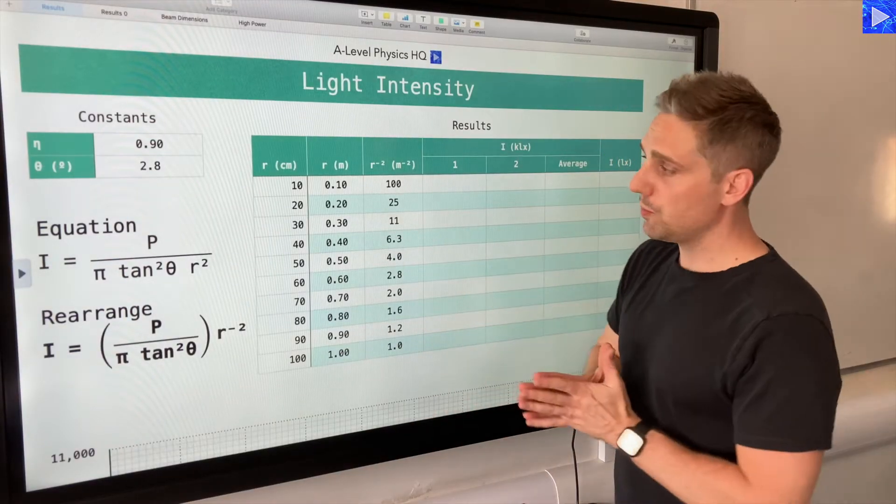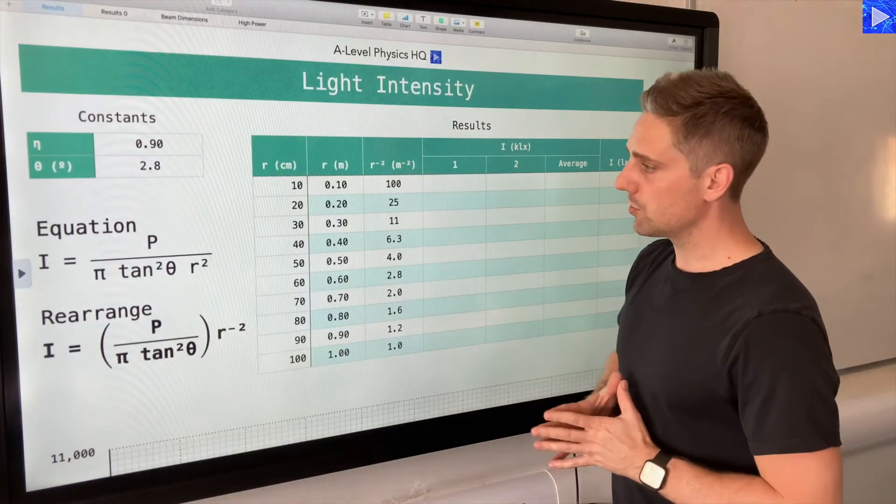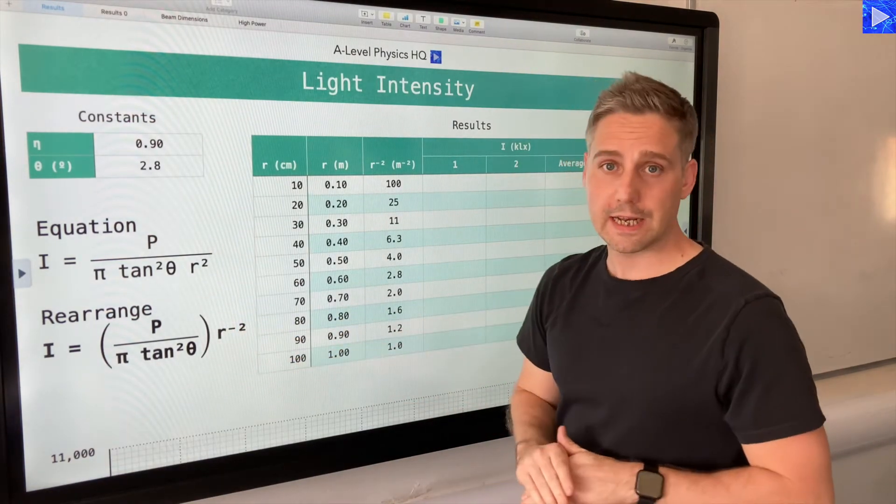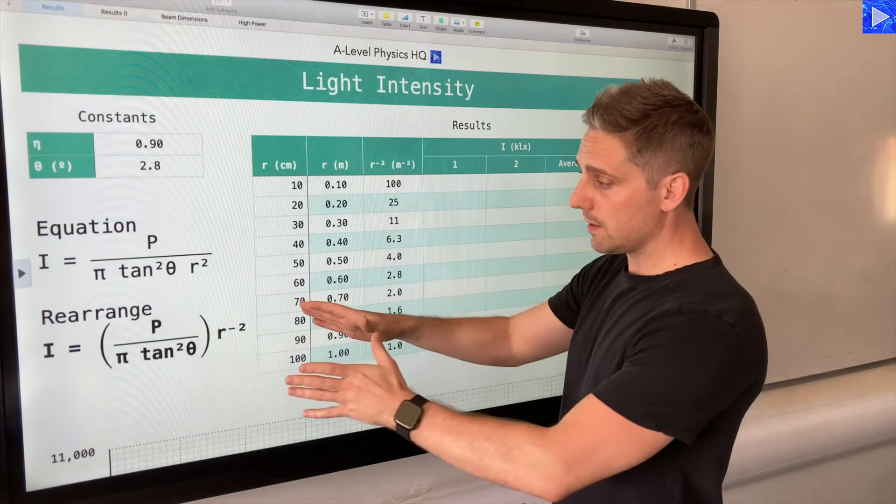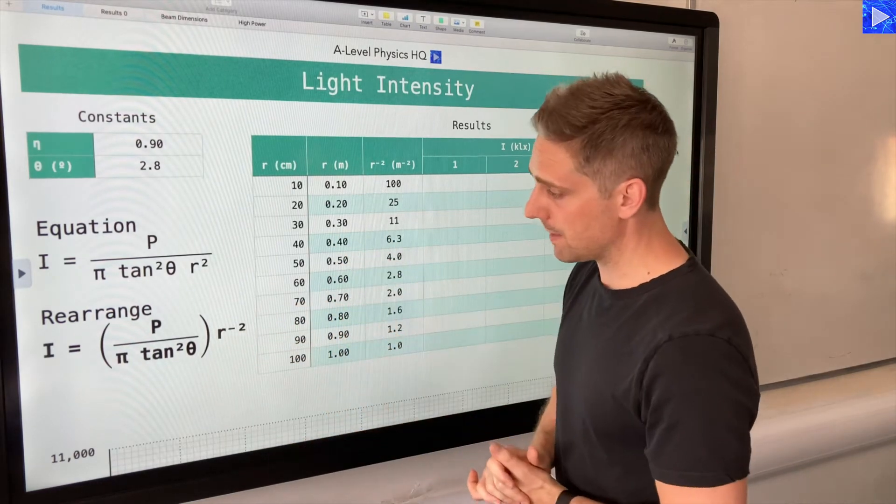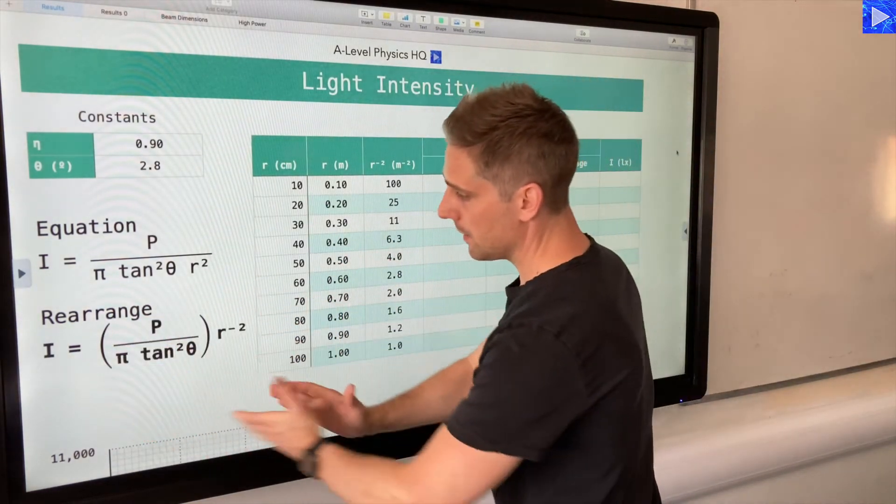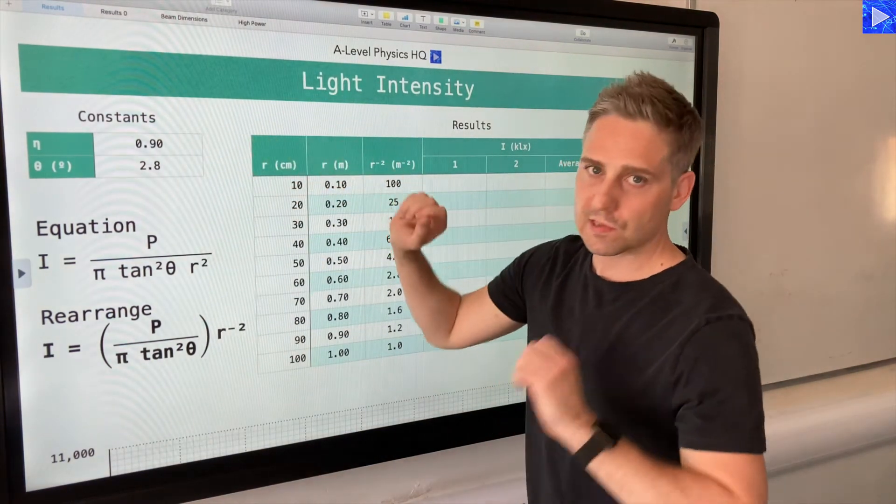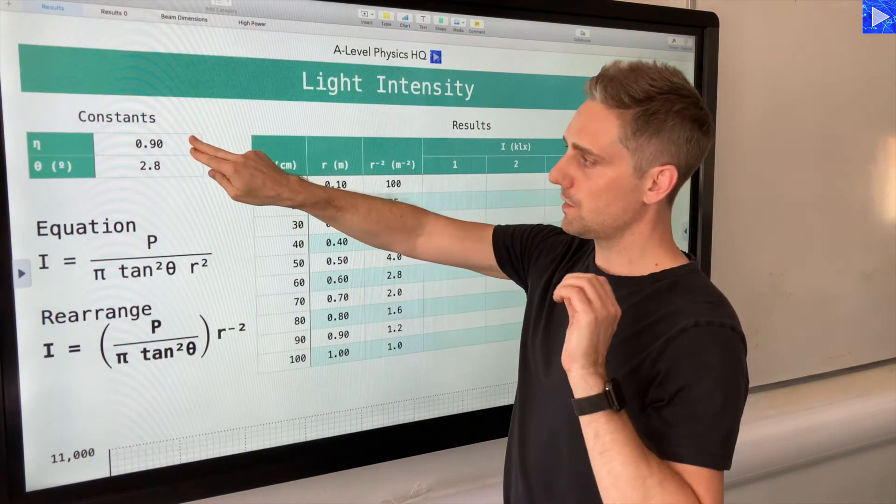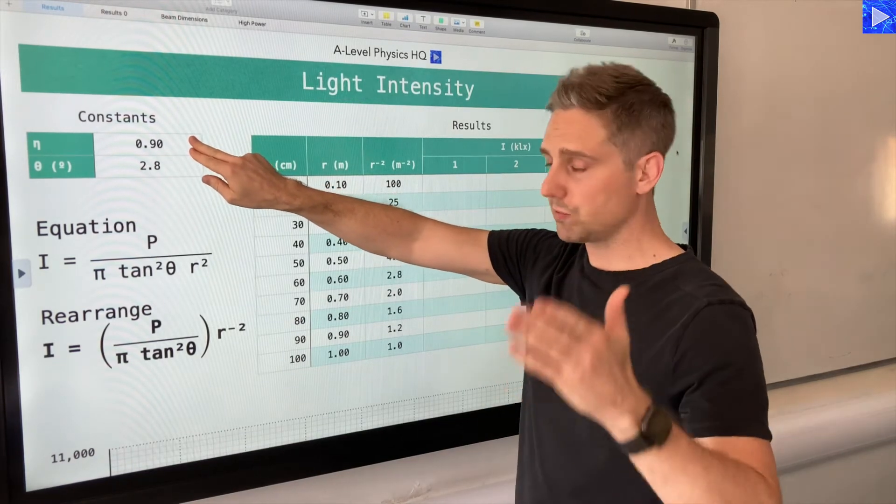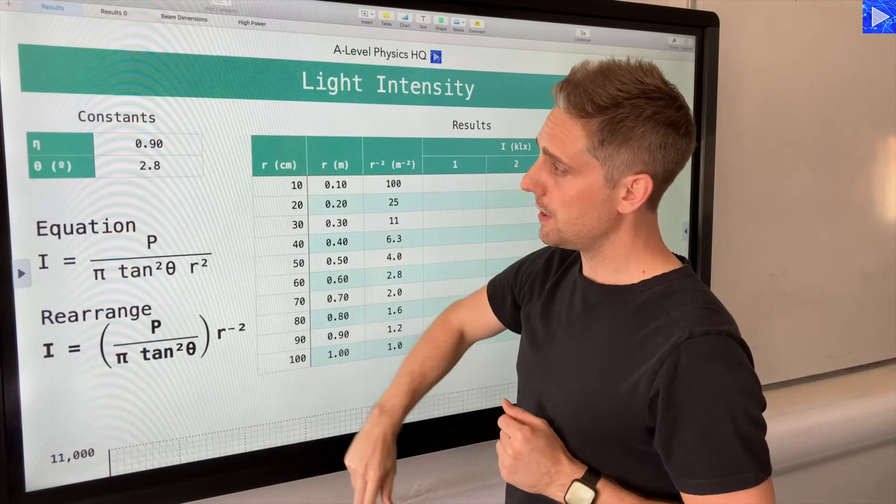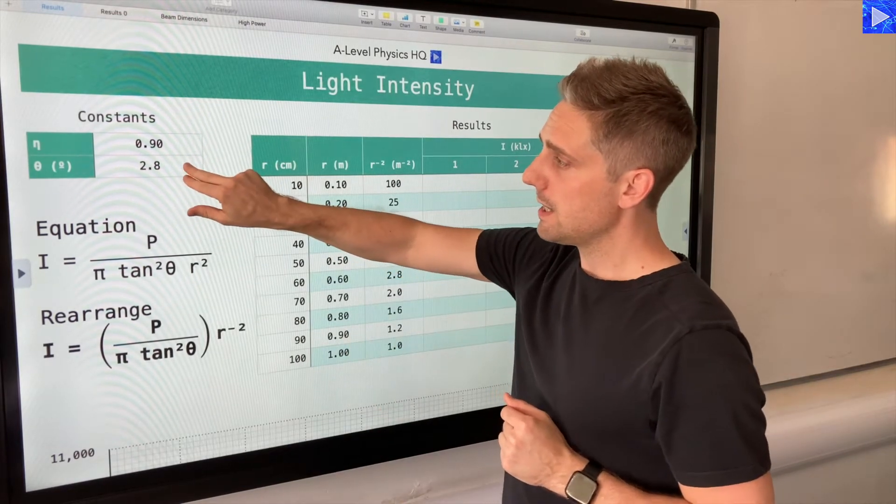Okay, so this is the spreadsheet we'll be using to do the number crunching for us. Here's the equation that we'll be using to do the analysis that I just explained where that came from. So we start with some constants. The first thing is the efficiency of an LED. The torch was an LED torch, so we're going to use that efficiency in a later stage in the analysis.